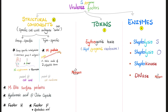We have one toxin known as erythrogenic toxin. Erythro means red — scarlet fever, because scarlet means red.